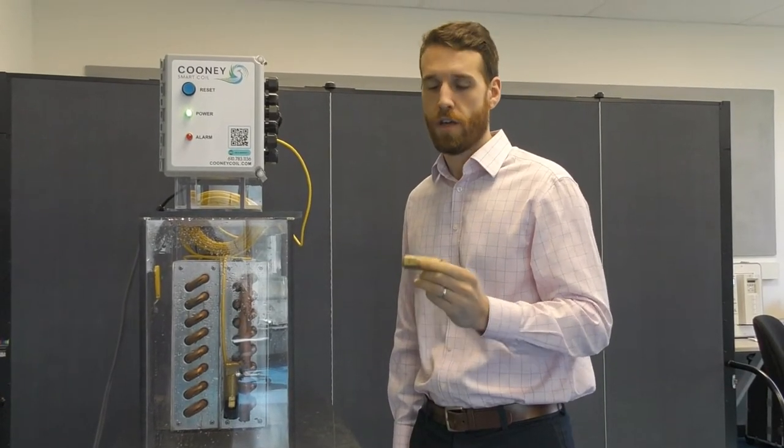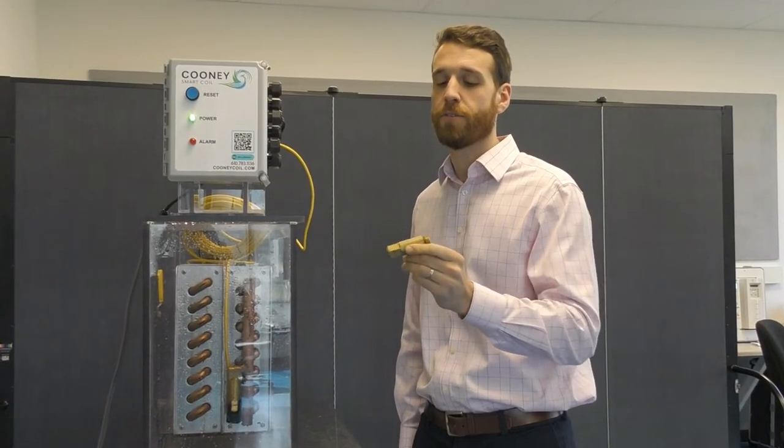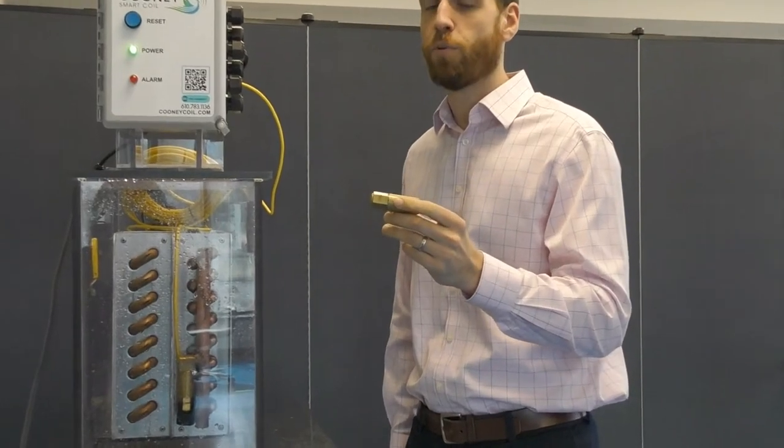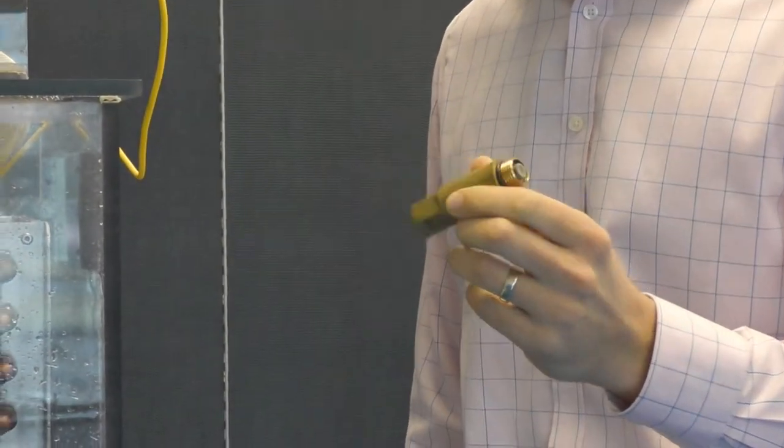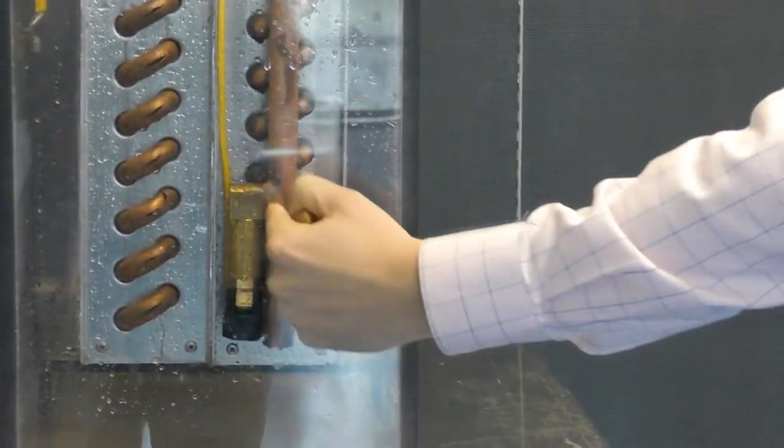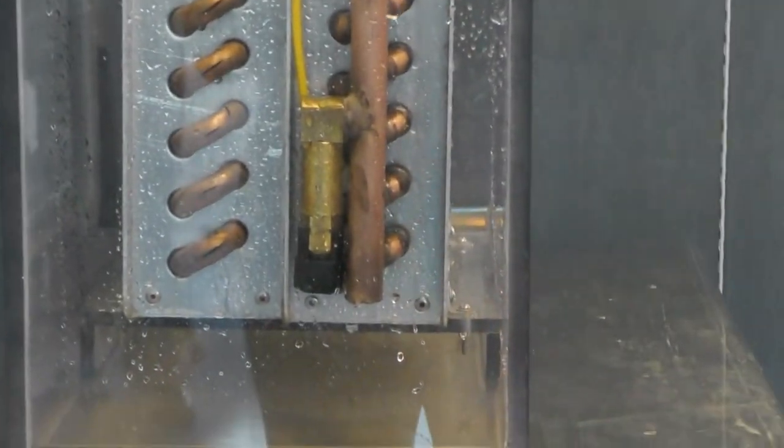We have a better solution. The magic behind the Cooney coil system is this valve, and this valve will discharge controlled amounts of liquid from the coil based on pressure or temperature. You'll see this valve mounted on the return bend of the coil here.